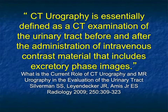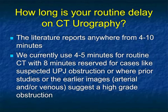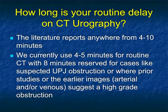CT urography is defined as the third portion of the exam — essentially what people would call a CT IVP — a CT exam of the urinary tract before and after IV contrast administration that includes excretory phase imaging. So we've covered the two earlier phases: arterial phase showing neovascularity and helping define clear cell versus papillary cell and AV shunting, and venous phase imaging defining the tumor and showing renal vein or IVC involvement. And then of course delayed phase imaging.